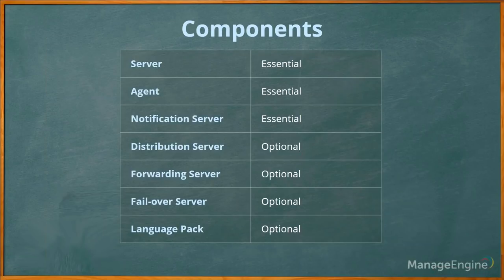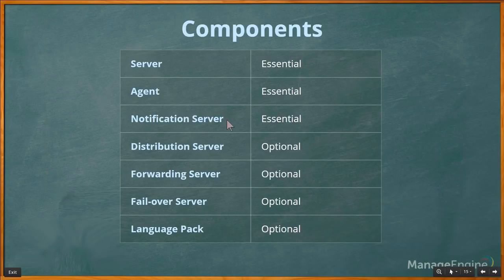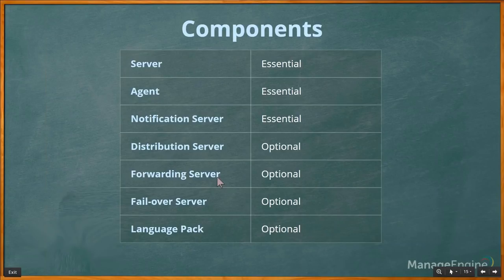Desktop Central has seven components, of which four are optional based on your requirement and licensing, and three are essential. You should now be clear about how the notification server and distribution server work. I'll provide more information on the notification server, distribution server, and forwarding server in the coming slides.